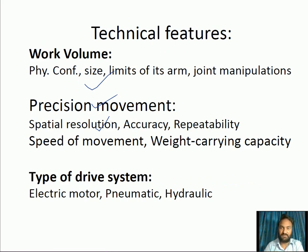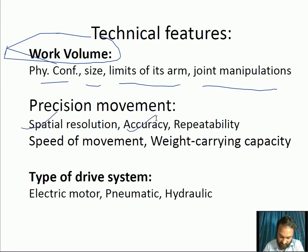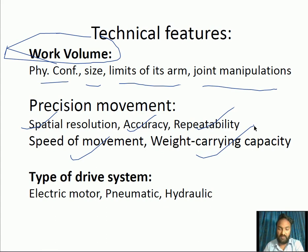In terms of technical features, the physical configuration of the robot, its arm size, and joint manipulators define the work volume or work envelope of the robot. Precision movement — related to spatial resolution, accuracy, repeatability, speed, and weight-carrying capacity — affects the location, speed, and precision of the robotic arm.